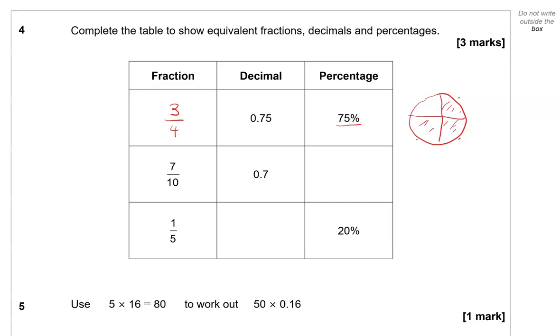So we've got now 7 tenths, which is 0.7, and that is 70%. It might help to think of this as money. So if you had a pound sign in front, you'd have to add 0 at the end. So that is 70 pence, which is also 70%.